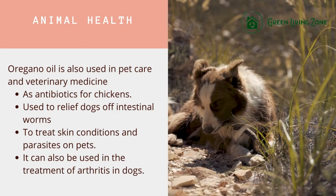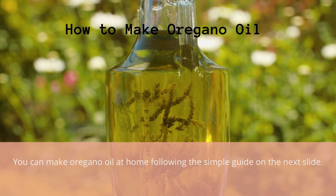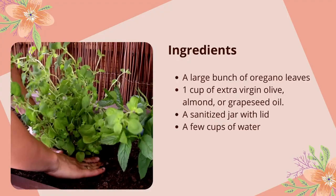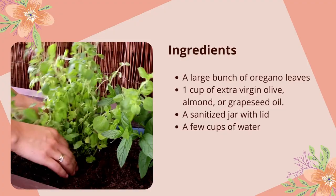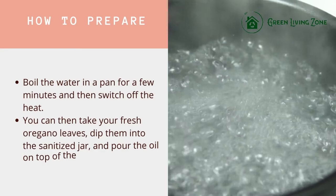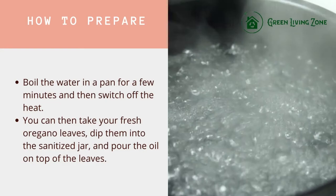How to make oregano oil at home: ingredients needed are a large bunch of oregano leaves, one cup of extra virgin olive oil, almond oil, or grape seed oil, a sanitized jar with lid, and a few cups of water. To prepare, boil the water in a pan for a few minutes and then switch off the heat.